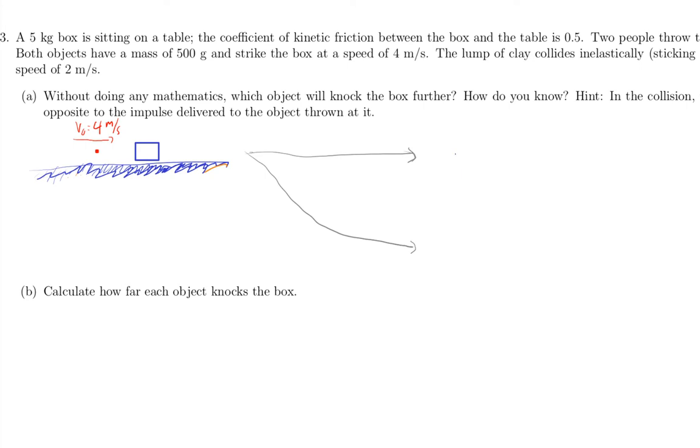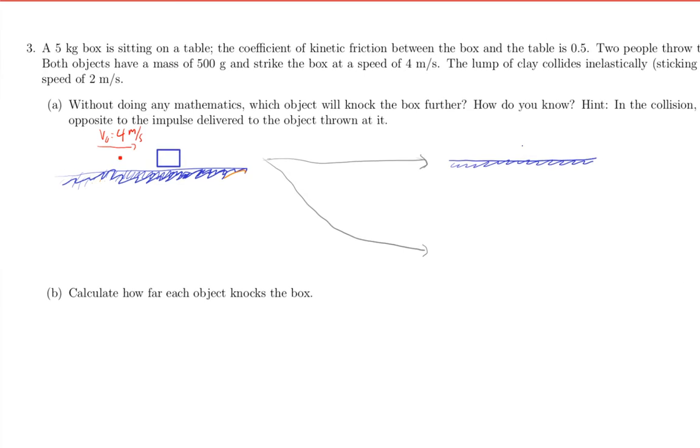So, drawing these again, here's our table. It's got some friction. There's a box. Either it sticks, and the whole thing moves that way at some velocity, or it bounces back.